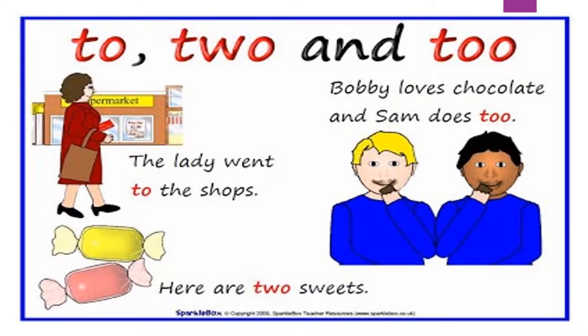Let's take one more example. Here we can see three words with different spellings and different meanings. The first word is T-O (to), next is T-W-O (two), and one more is T-O-O (too). They have different meanings and different spellings, but when we pronounce them, they sound the same. Using the first word in a sentence: 'The lady went to the shops.'